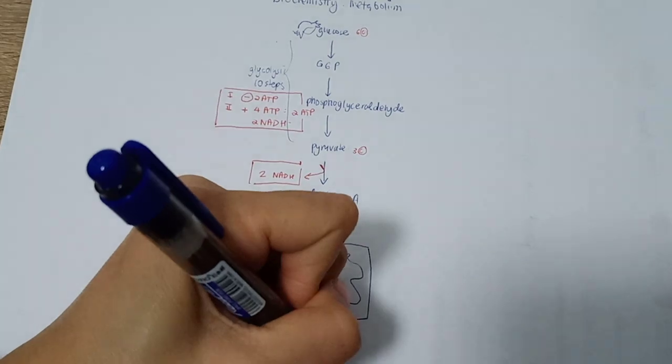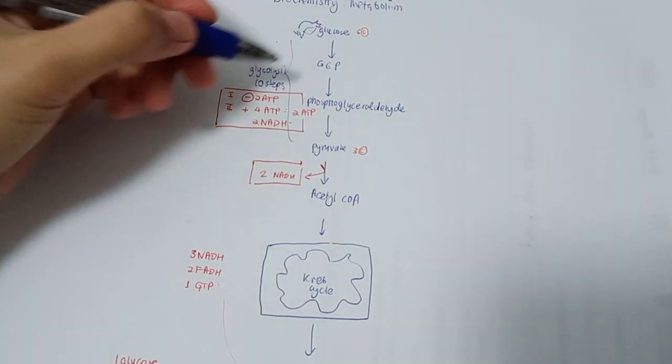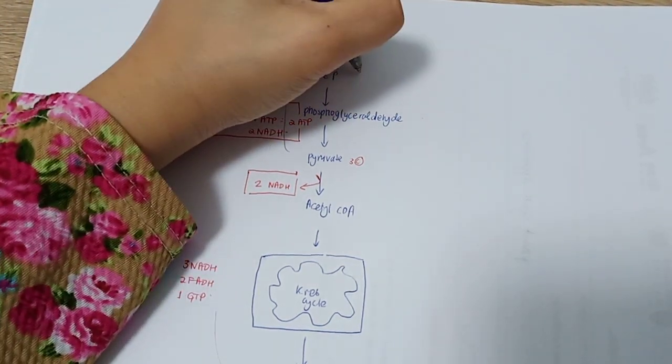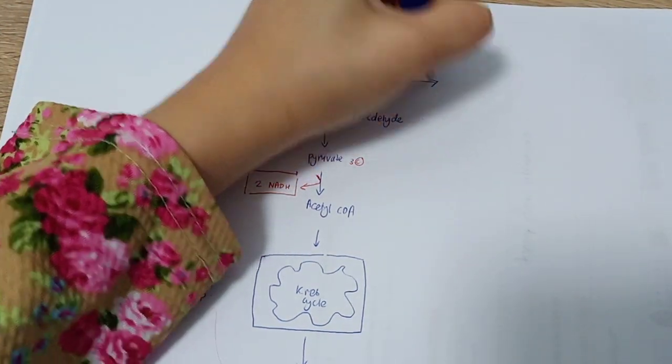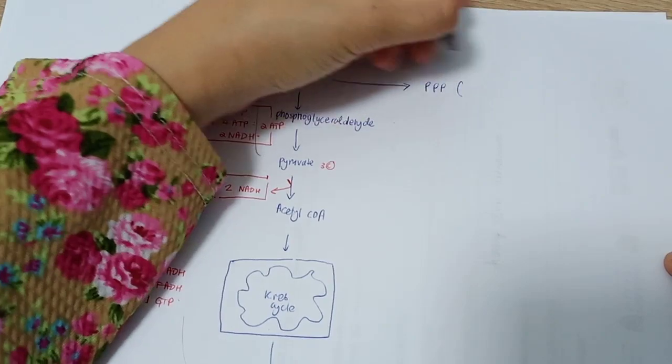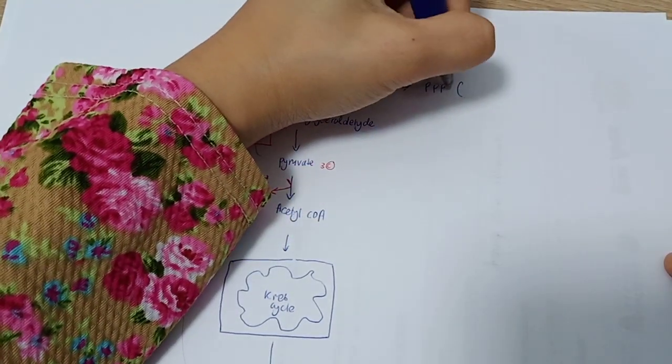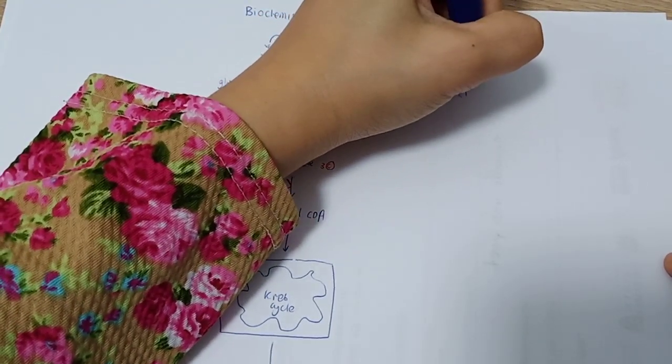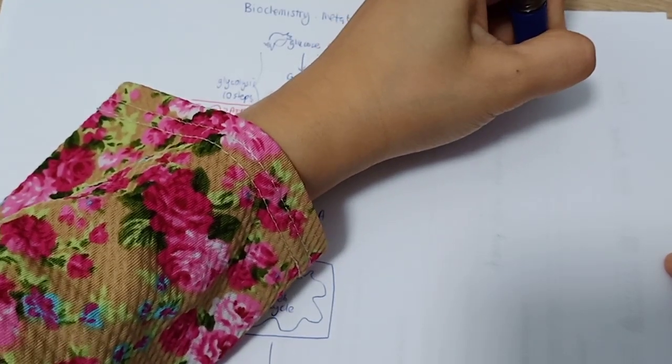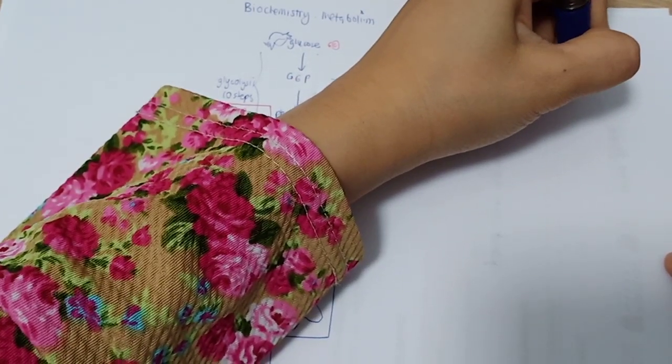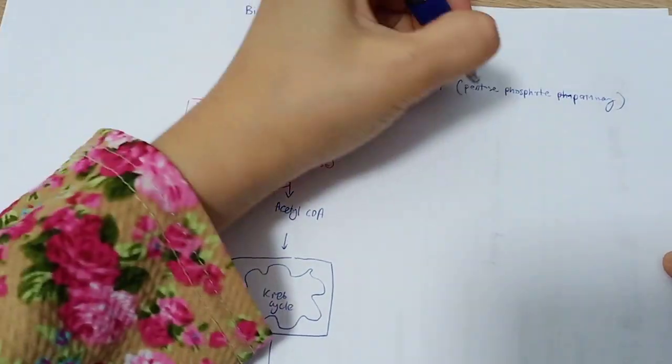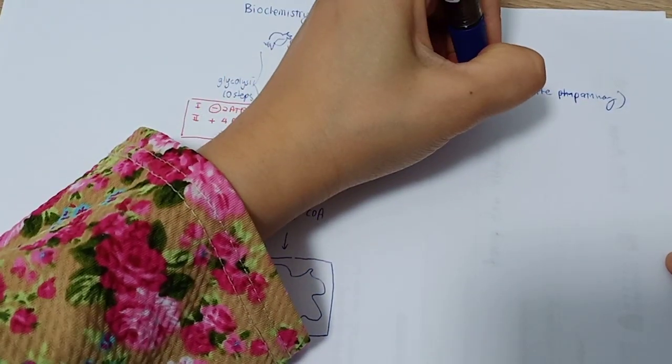But what if the energy is enough and the ATP is high enough? Where will the glucose be shunted into? The first one is glucose-6-phosphate. The first shunt will go to the pentose phosphate pathway, which is very important in anabolic conditions.